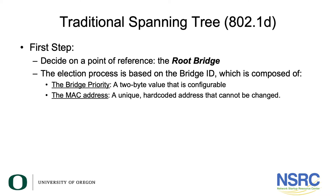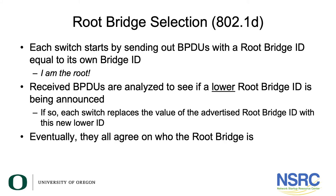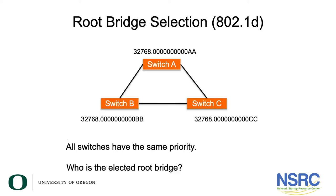The first of four steps is to decide on a point of reference called the root bridge, chosen through an election process based on the Bridge ID. The Bridge ID is composed of the bridge priority — a two-byte configurable value — and the MAC address set by the manufacturer. Every switch starts by sending BPDUs claiming to be the root. Each received BPDU is analyzed; if a lower root bridge ID is found, that lower value replaces the current advertised root bridge ID. Eventually, all switches agree on who the root bridge is.